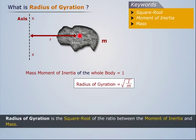Thus, radius of gyration is the square root of the ratio between the moment of inertia and mass.